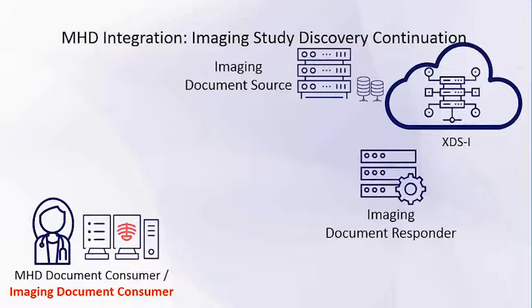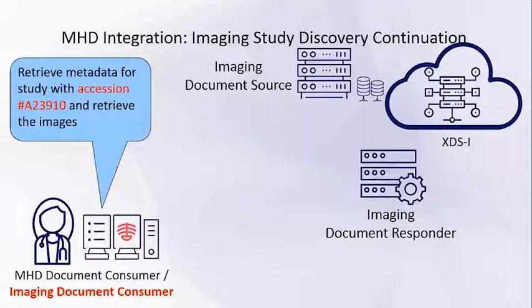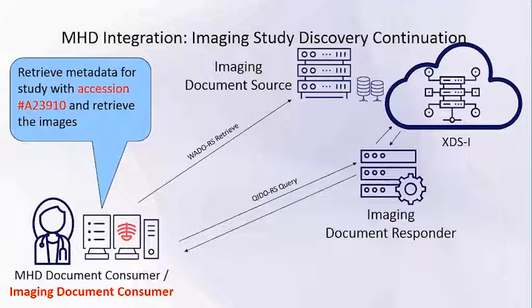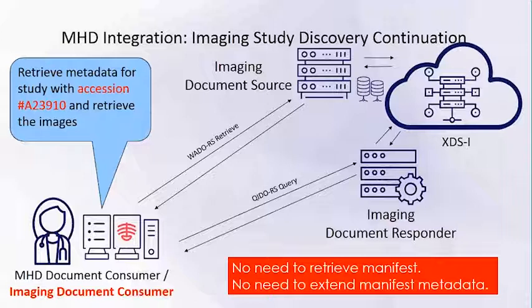With WIA, what you can do is take the accession number from the MHD response. Now as a WIA imaging document consumer, with that accession number, you can use a QIDO-RS query to the imaging document responder that has an integration with the XDSI backend to get additional information about the study, just like what I showed earlier. And then once you get the response, you can use WIA to do the retrieve. Because of using the RESTful API, especially with the QIDO-RS query, you now have access to more metadata using a query method instead of retrieving the manifest and then retrieving the study, giving you a better way to prepare the consumer before viewing.